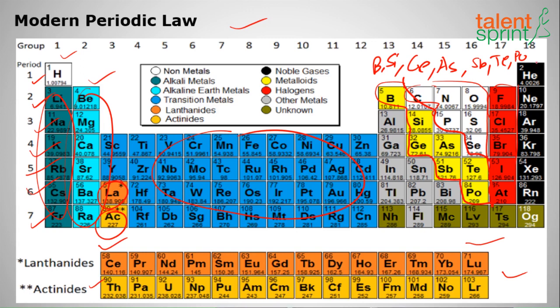These are called noble elements: helium, neon, argon, krypton, xenon, and radon. Sometimes there may be a question: which element is in the fourth group and fourth period? That is titanium. You must be thorough with the modern periodic table.